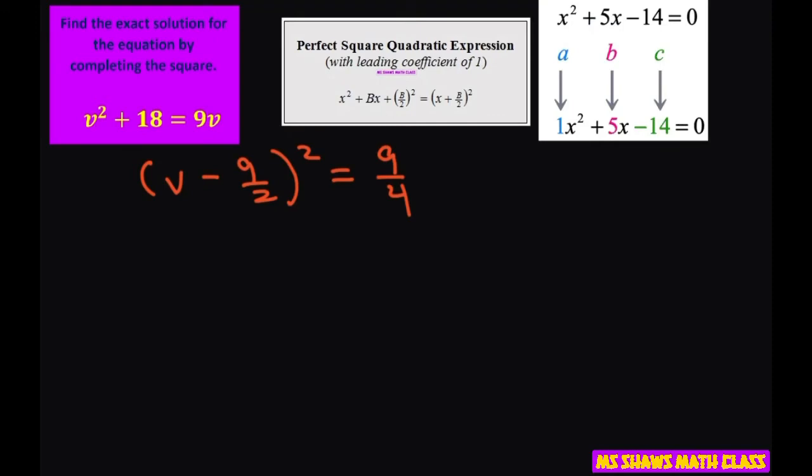All right, now let's go ahead and solve for v because that's our goal. So now it's easy to solve because all you have to do is take the square root of both sides. Don't forget to put the plus and minus here. And you have v minus 9 halves equals plus or minus, square root of 9 is 3, square root of 4 is 2.